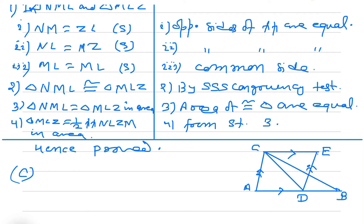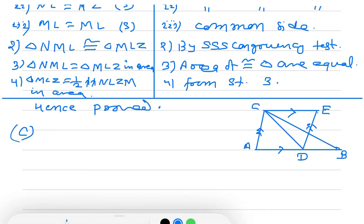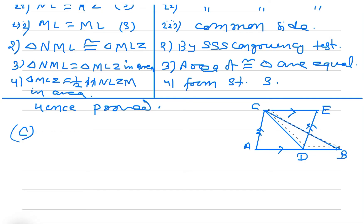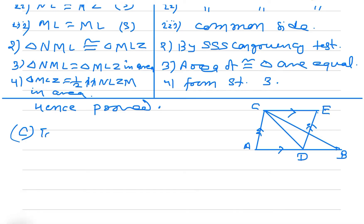Now we are going to solve number C. In number C, looking at the figure already drawn, we have to prove that triangle DBC is equal to triangle CDE in area.